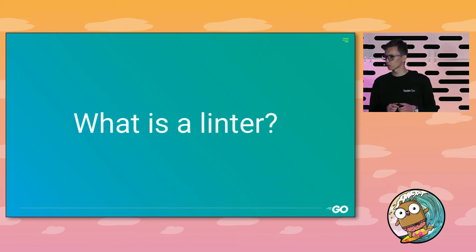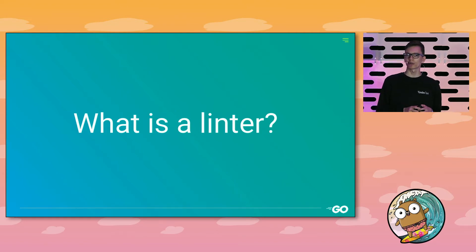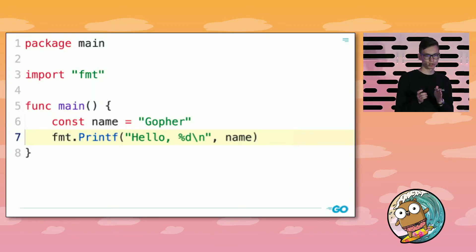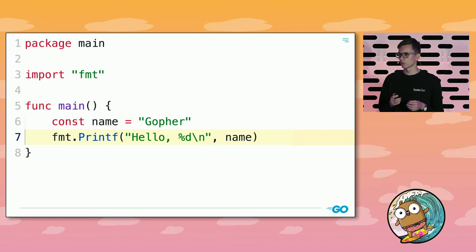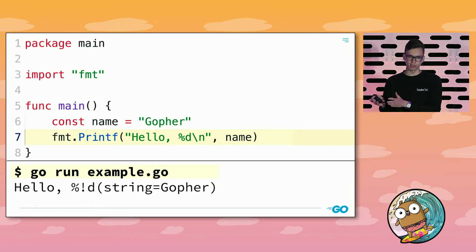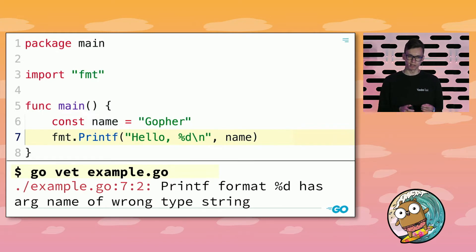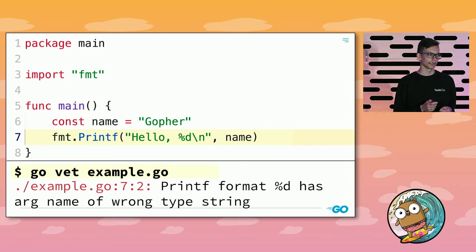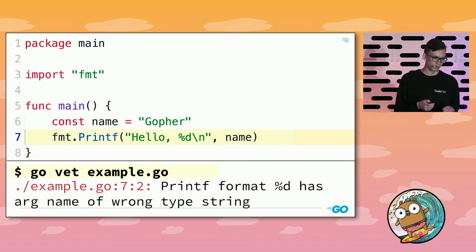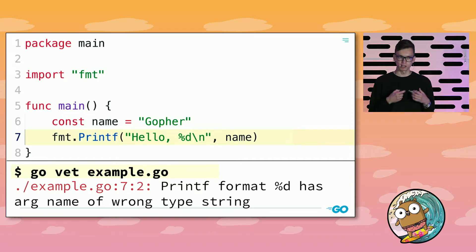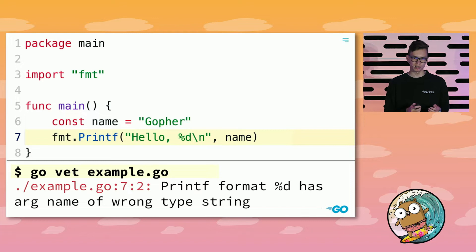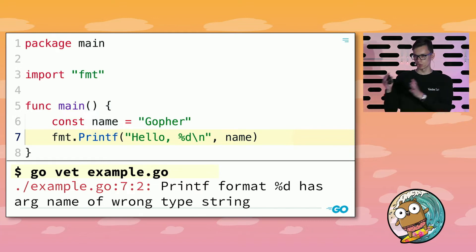Please raise your hands if you have used linters in Go. Okay, that's good — almost everyone. I will be brief. If we have an example program with an issue on a line — a formatting error, using %d instead of %s — if we run it, we see that it was printed incorrectly. We can run this source code through GoVet, the default linter in Go, and it warns about this issue. I define a linter as a program that gets source code as input and outputs found issues in it.